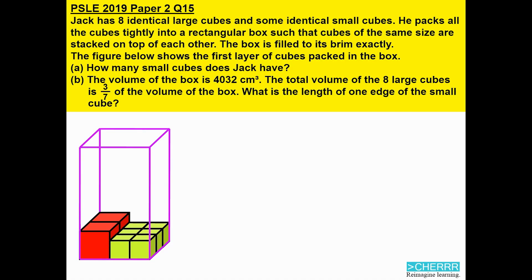PSLE 2019 Paper 2 Question 15: Jack has eight identical large cubes and some identical small cubes. He packs all the cubes tightly into a rectangular box such that cubes of the same size are stacked on top of each other. The box is filled to its brim exactly. The figure below shows the first layer of cubes packed in the box. Part A: How many small cubes does Jack have?